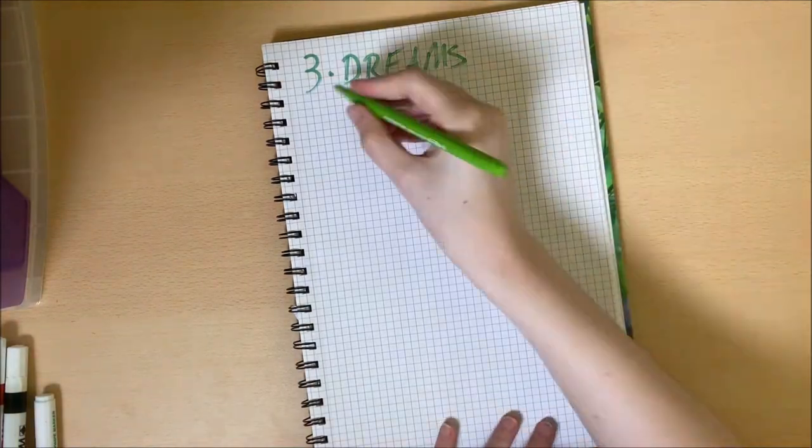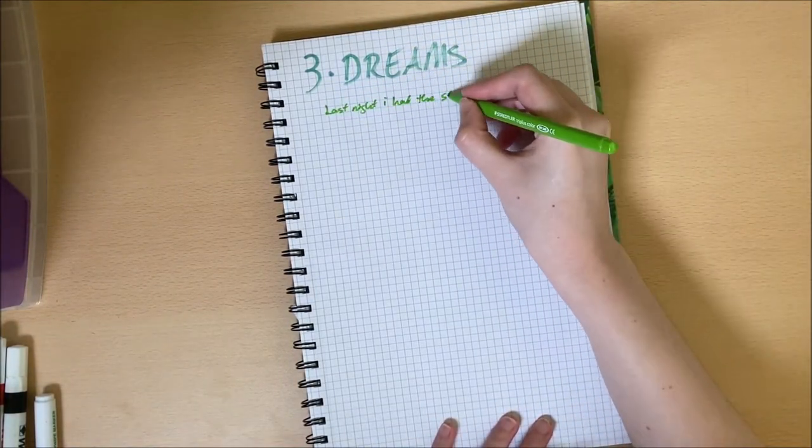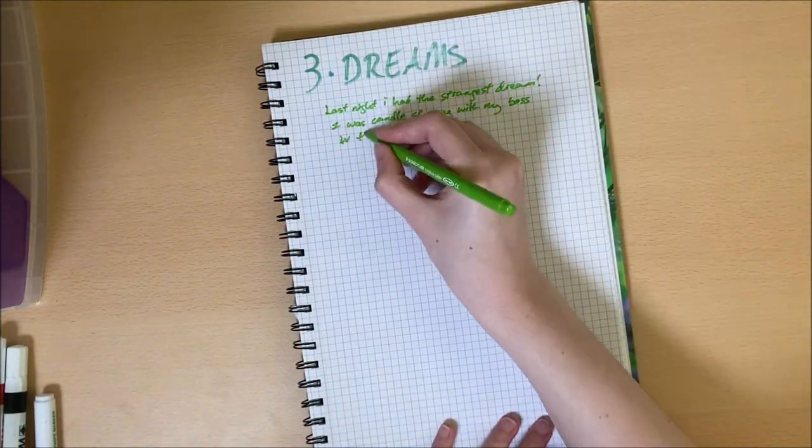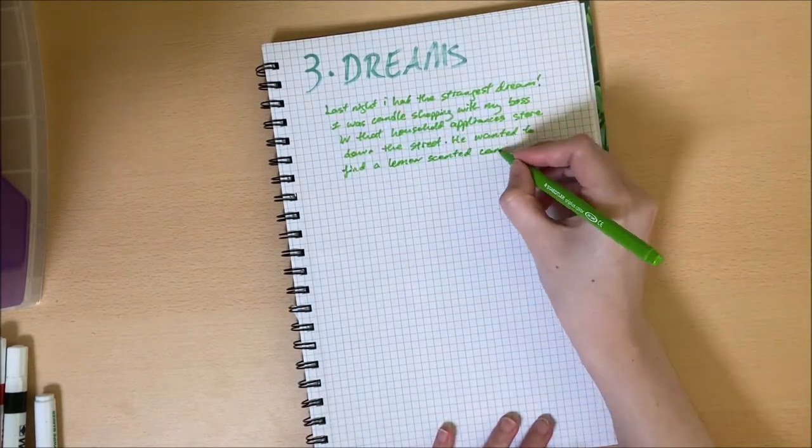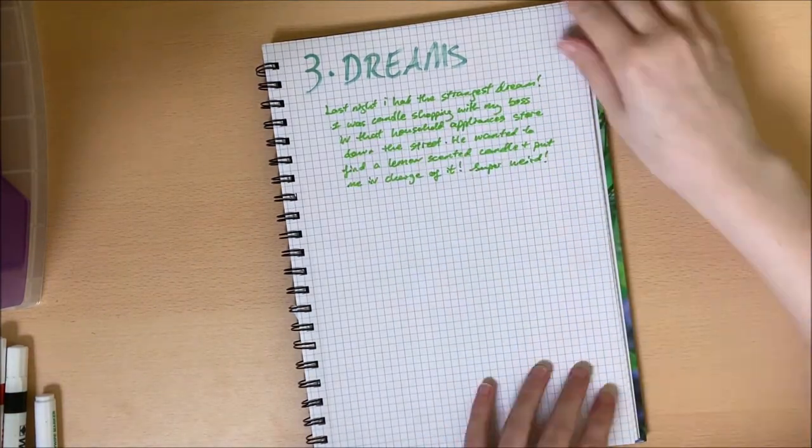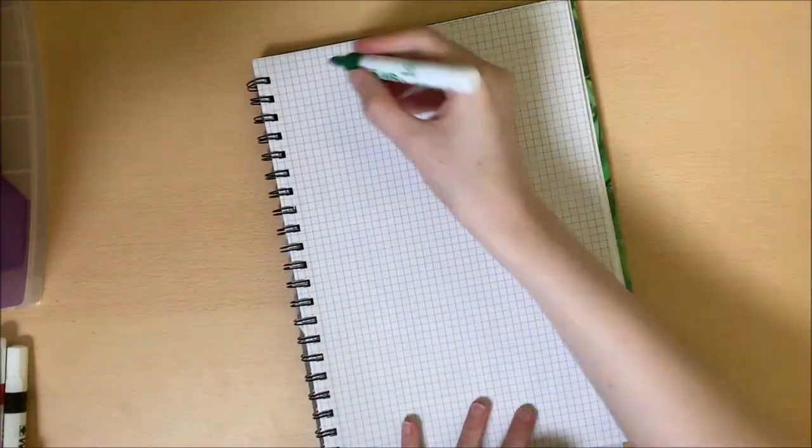Idea number three is to use the remaining pages as a tracker for your dreams. We all have had weird dreams in the past and you wake up and five minutes later you forget it. So keep the old notebook next to your bed, write them down as soon as you wake and you'll never forget again.